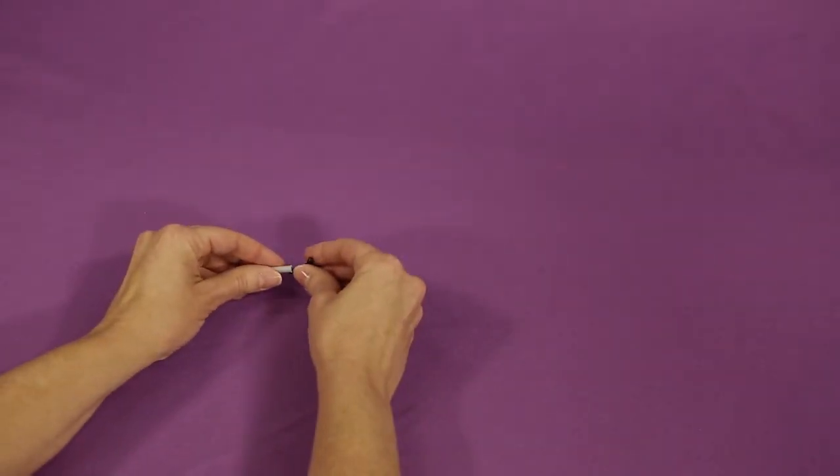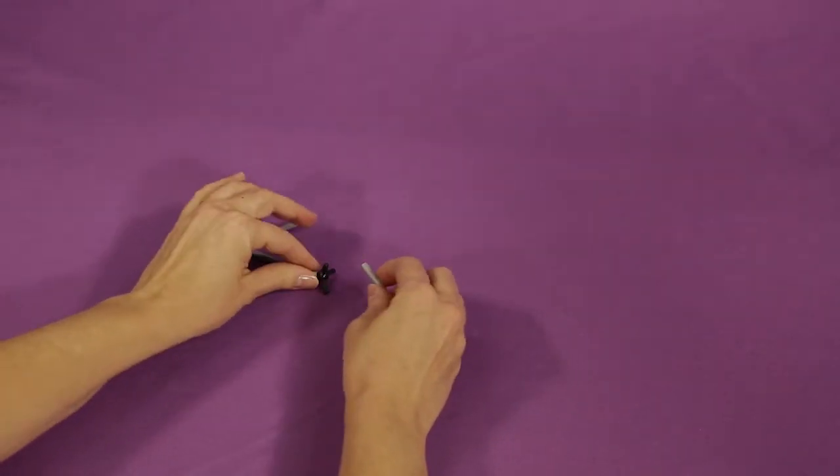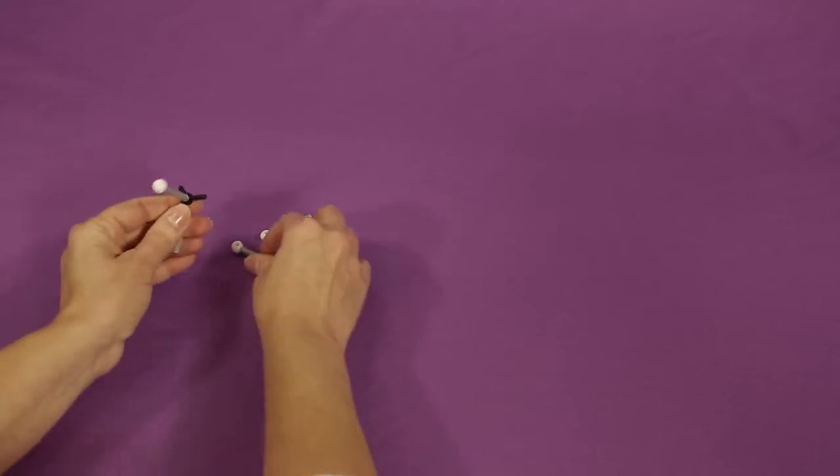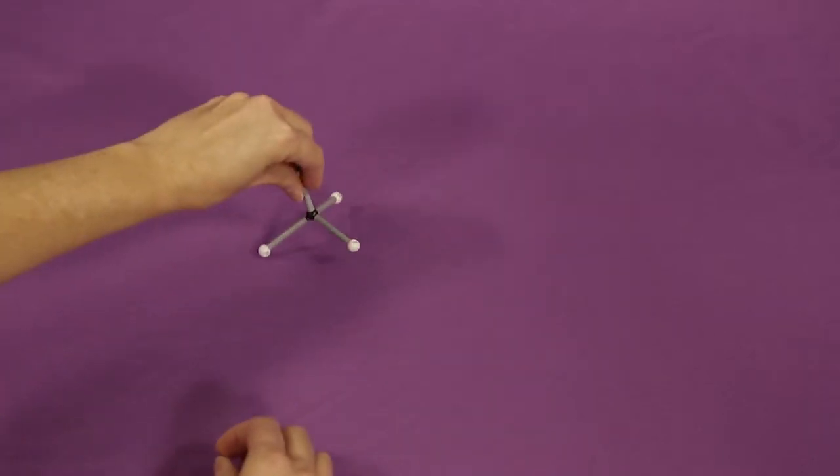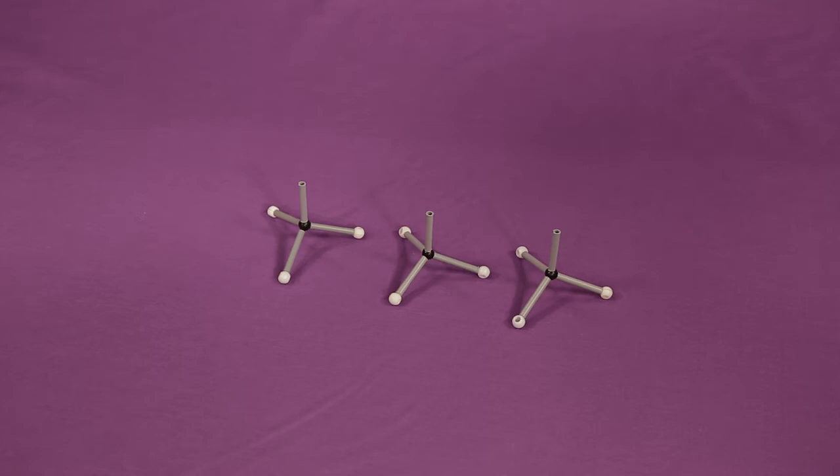Assemble a methyl group by attaching a carbon atom to one of the sides of a single bond. Add three hydrogens. Make a total of three methyl groups.